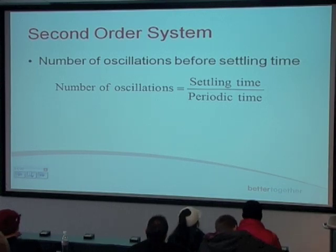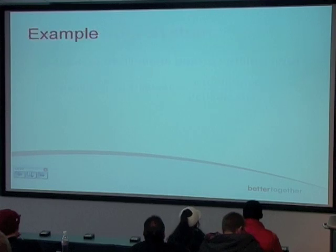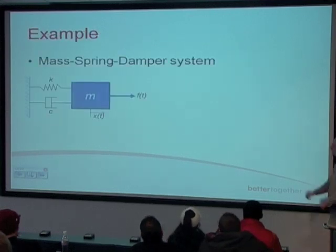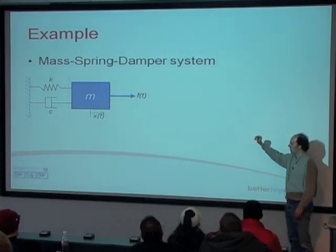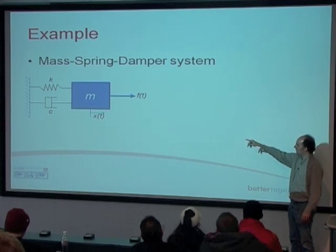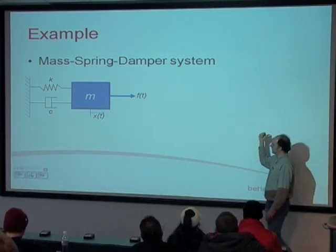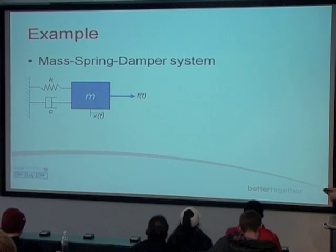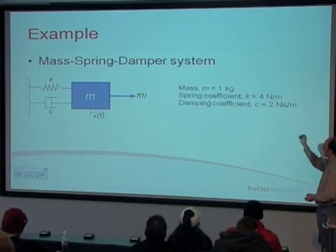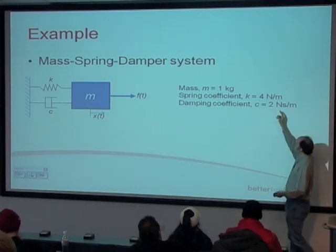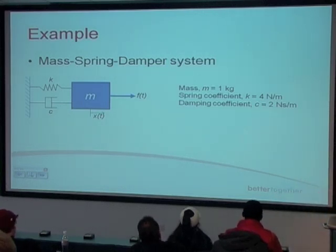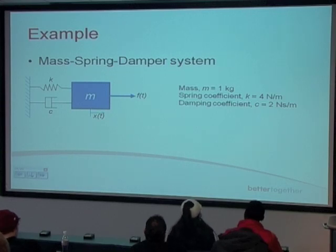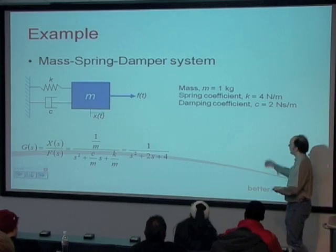The best way to look at this is through an example — a classical mass-spring-damper system where you've got a spring of constant k, a damper of constant c, and a mass m moving in the x direction, with x positive to the right. A force f(t) is applied, representing our input — be it a step, ramp, sinusoid, or whatever. Our values are: mass m equals one kilogram, spring coefficient k equals four newtons per metre, and damping coefficient c equals two newton-seconds per metre.